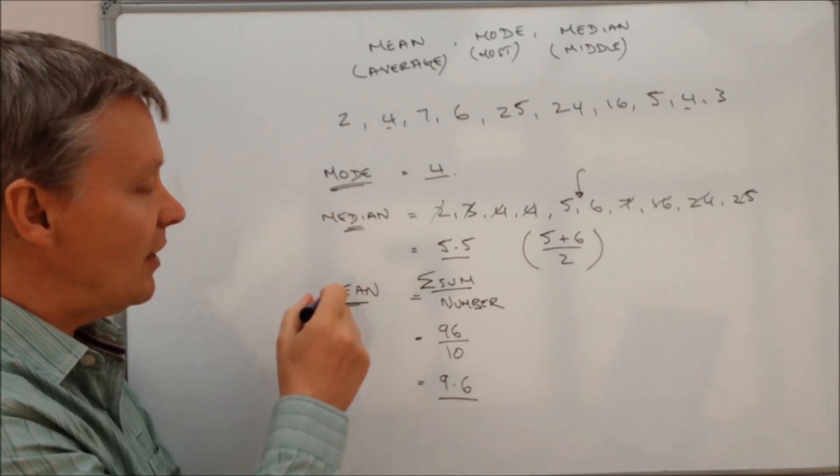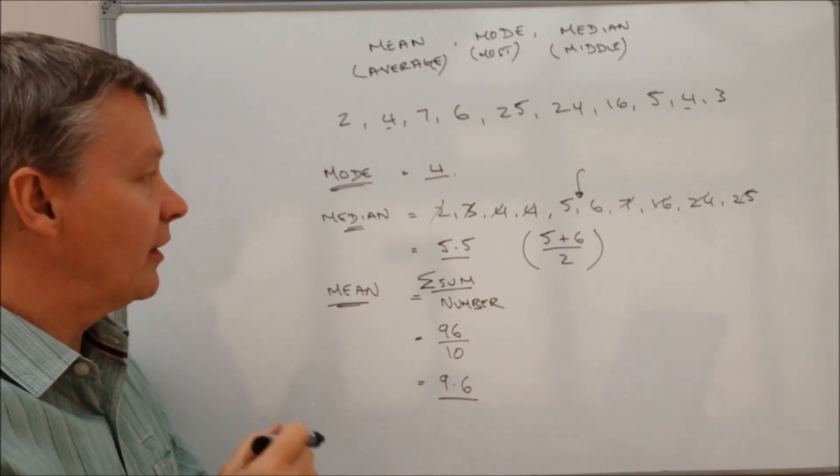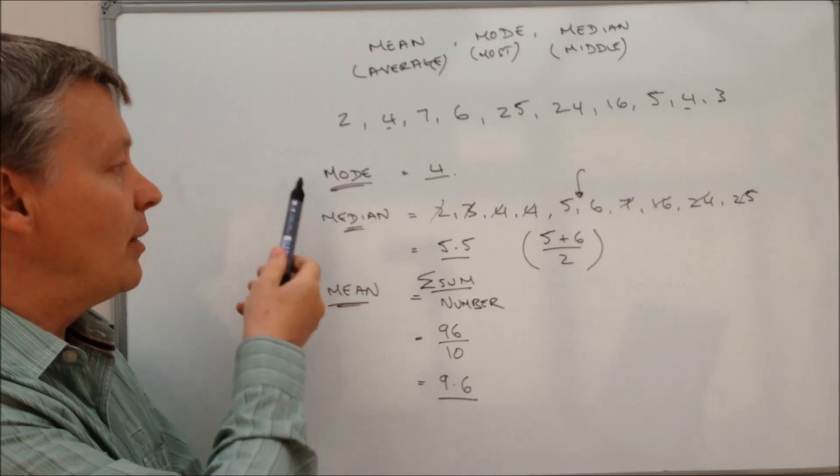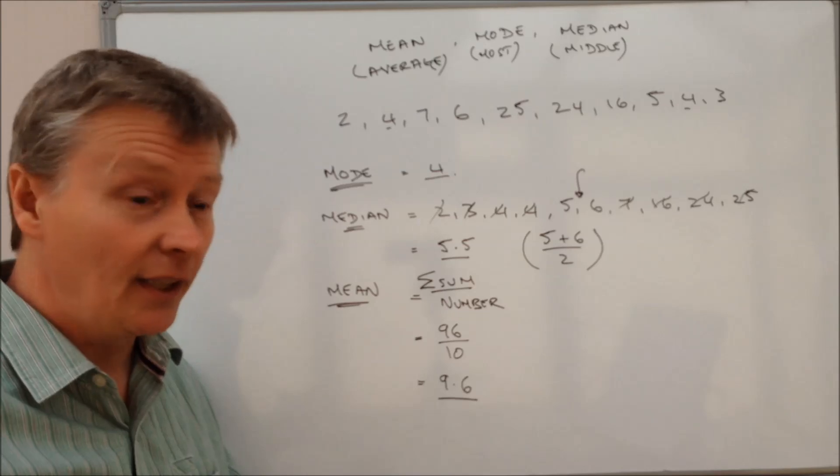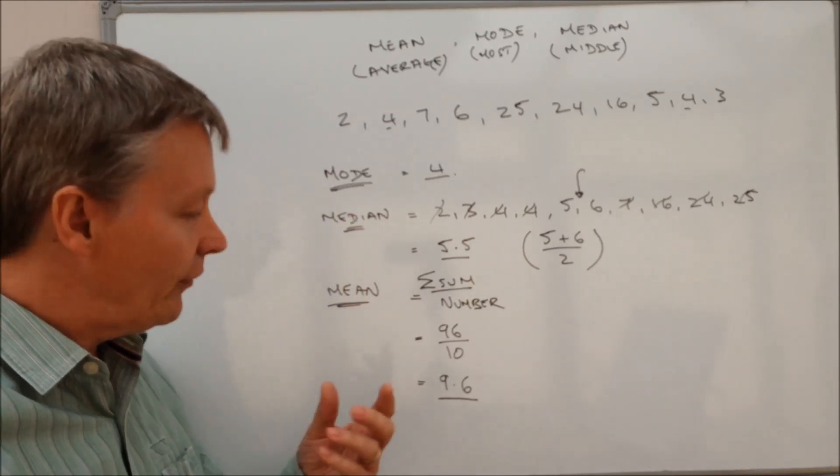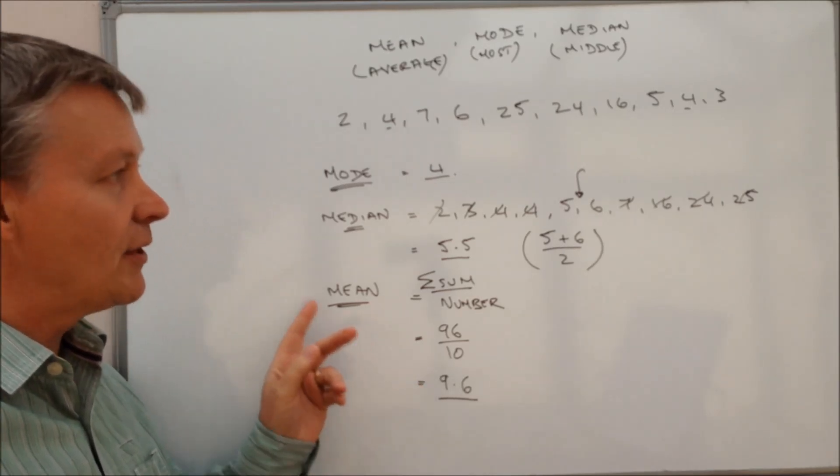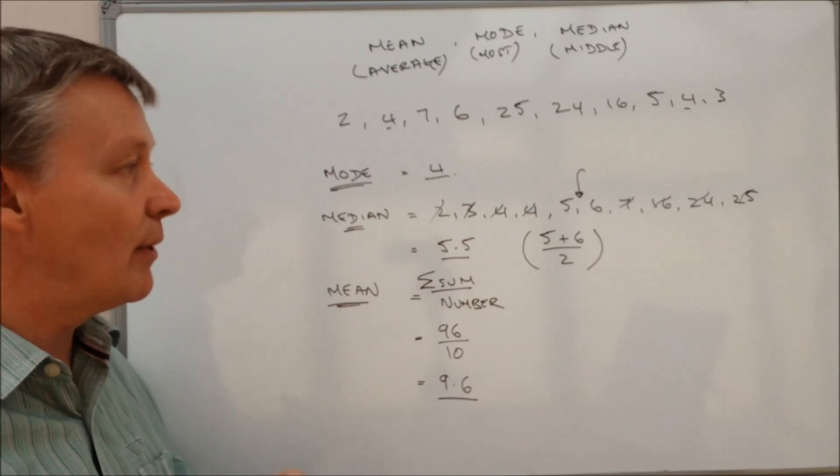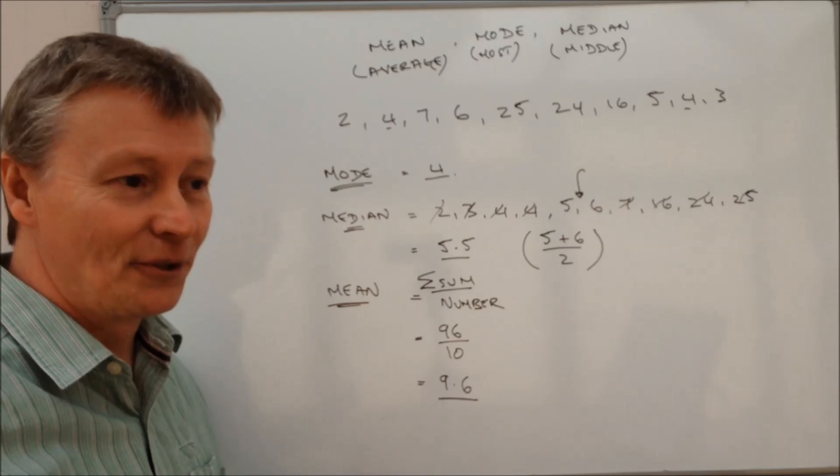So the three ones, the three averages that you need to be aware of that you're going to come across in GCSE are going to be mode, median and mean. And I'm going to use a couple of videos in this playlist to talk about these different types of values.